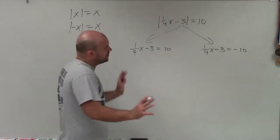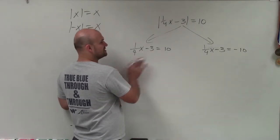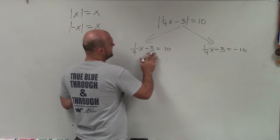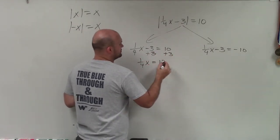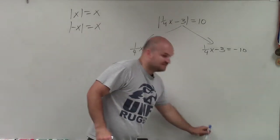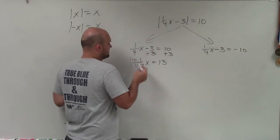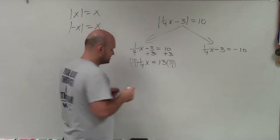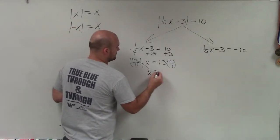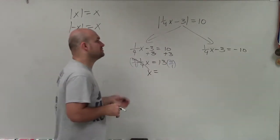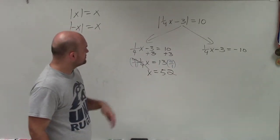This is a two-step equation — there's a fraction there, but that's OK. First, I'll use inverse operations and add 3 to both sides. So I have one-fourth x equals 13. To get rid of the fraction, we can divide, which is the same as multiplying by the reciprocal. Multiplying a fraction by its reciprocal gives 1, so x equals 13 times 4, which is 52. So 52 is one solution.